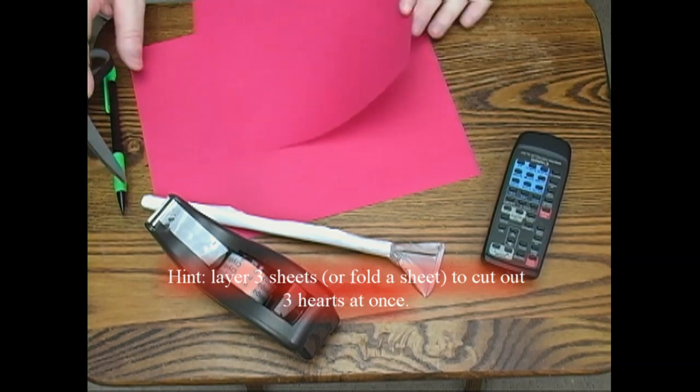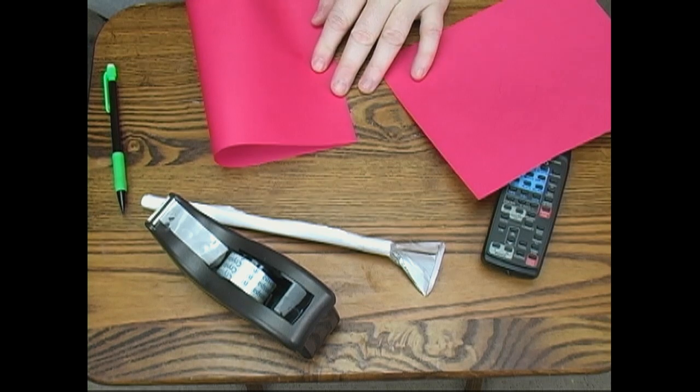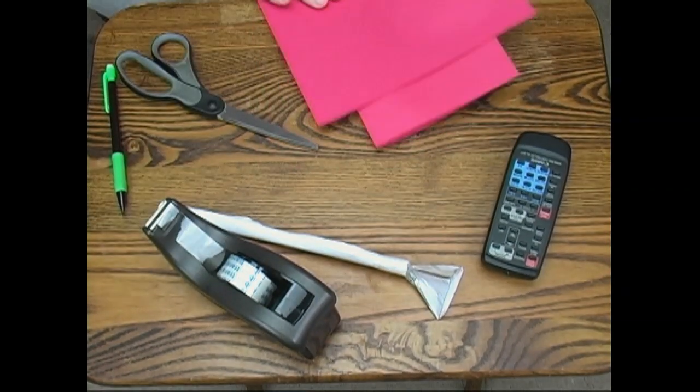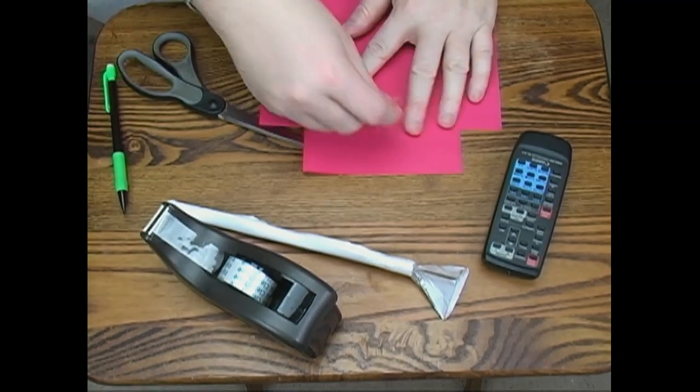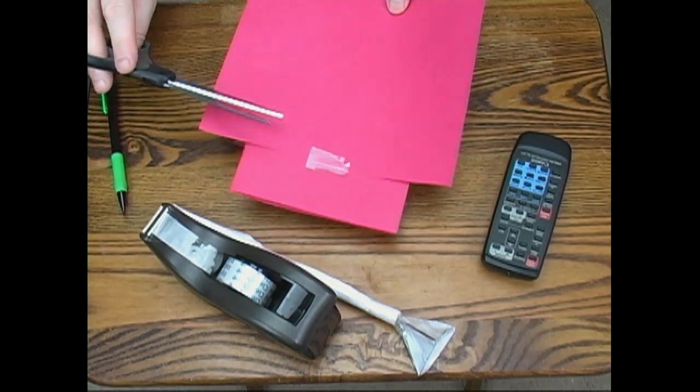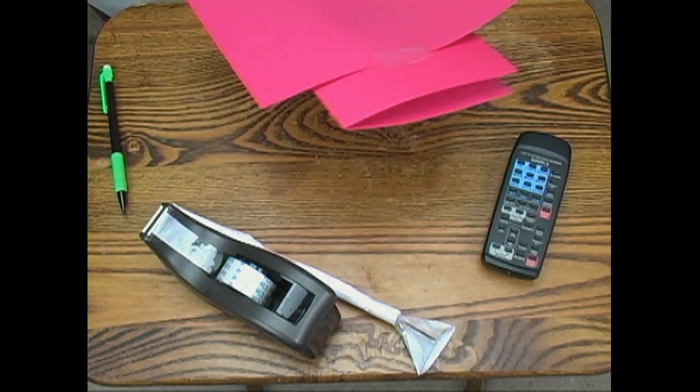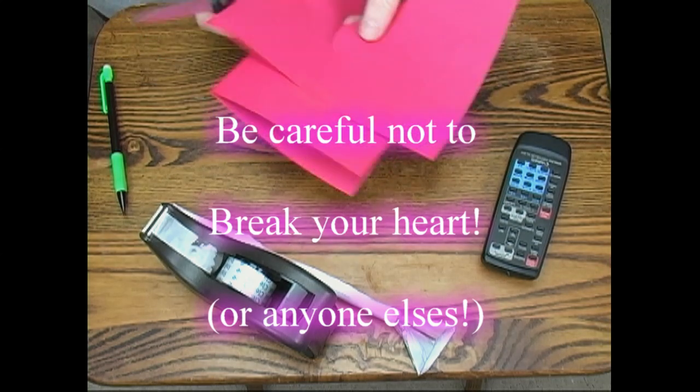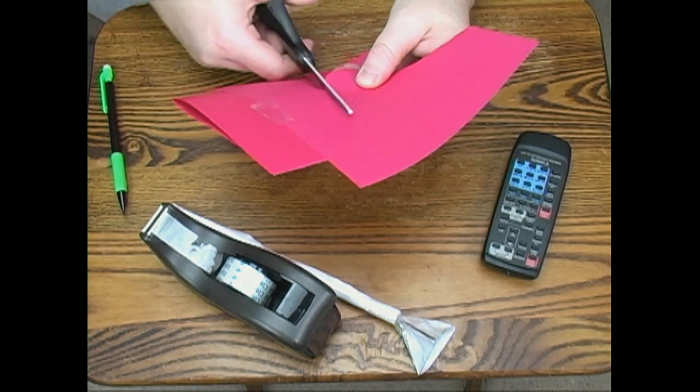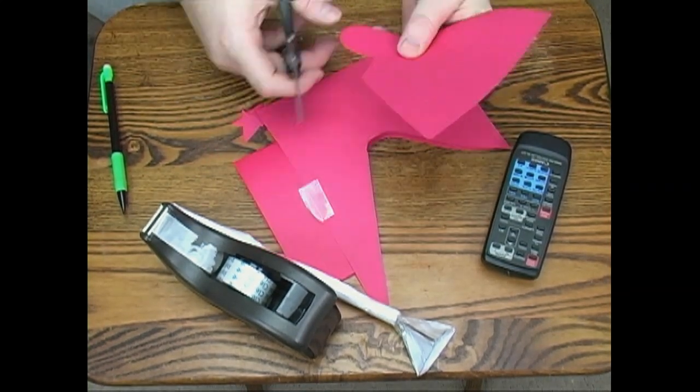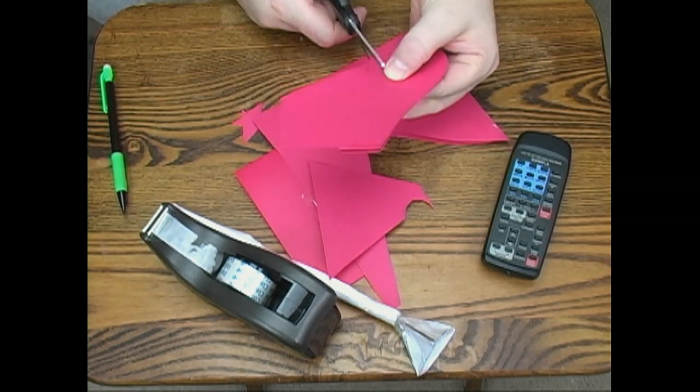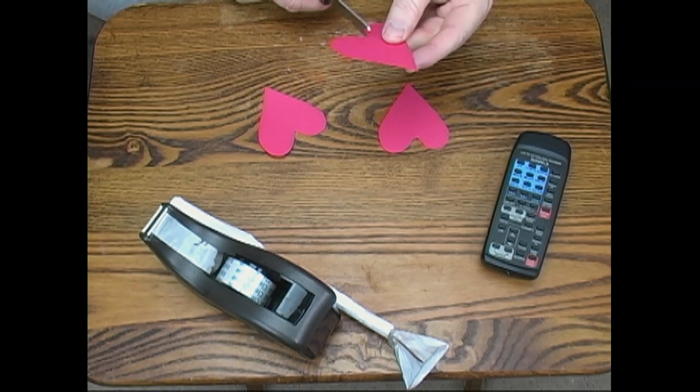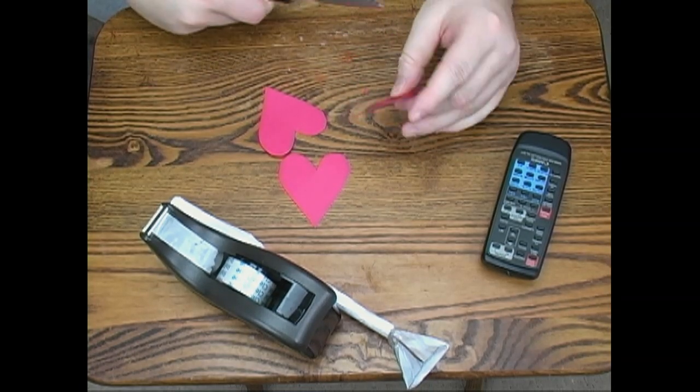So once you have one, go ahead and cut it out. Let's do a little trick here. If we take this extra sheet of paper, fold it over, I can cut three hearts out at once. I'm going to put a little tape on to make sure it doesn't move on me while I'm cutting. We're going to need three hearts. This is kind of an easy way to do that. We're cutting out our hearts. And we should have three identical hearts here.